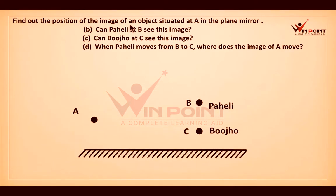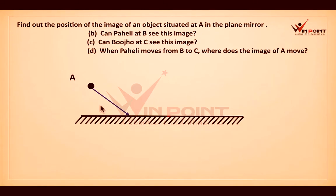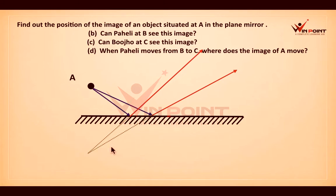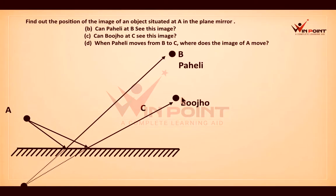Find out the position of the image of an object situated at A in the plane mirror. Can Paheli at B see this image? Can Bhujo at C see this image? When Paheli moves from B to C, where does the image of A move? First we mark the image of A by considering two incident rays, which reflect obeying the laws of reflection. We extend these two reflected rays and find the position of A's image. Paheli is standing here at B and Bhujo is standing at C.